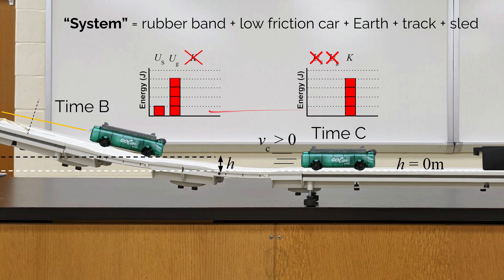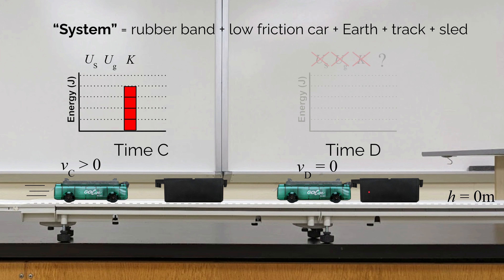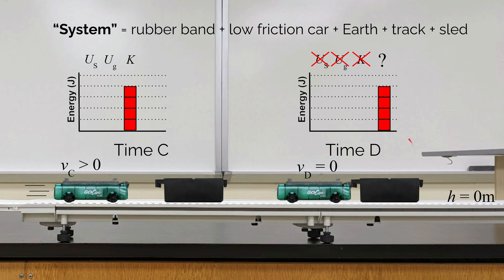Going back to energy bar graphs, at time B when the car was at height, there was no kinetic energy because it wasn't moving. When it got back down, all that energy is now stored in the kinetic energy account. Now let's go to the last event where the car collides with the sled and they all slow down and eventually come to rest. When the car was moving, there was energy stored in the kinetic energy account. At some later time, the car and sled together are not moving, so there can't be any stored energy in the kinetic energy account. There's nothing in the unstretched spring, and all things are at a height of zero — so there's zero gravitational potential energy. Those four bars of energy in the kinetic energy account had to go somewhere.